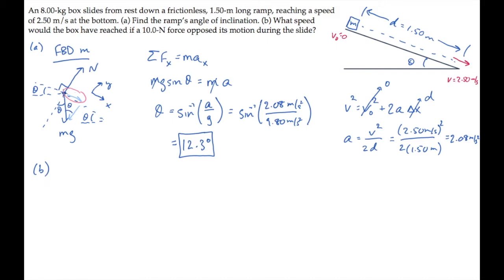Opposite the motion, so that when we sum forces in the x-direction, we get mg sine theta, the same component as last time, minus this new force F that's opposing the motion, and those sum to the mass times acceleration.